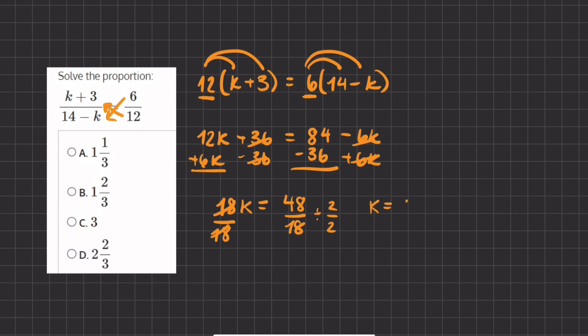We have k equals 24 divided by 9. Our answer is written in a mixed number form, so let's turn this improper fraction into a mixed number. We're going to ask ourselves, how many times does 9 go into 24? And that is 2 times.